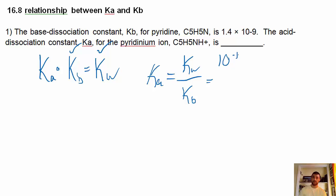Plug in the numbers. Kw is 10 to the minus 14. Kb is 1.4 times 10 to the minus 9. And what do we get? The answer, 7.14 times 10 to the minus 6. That's it.